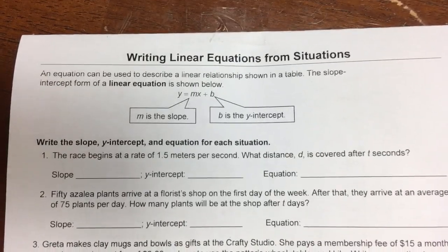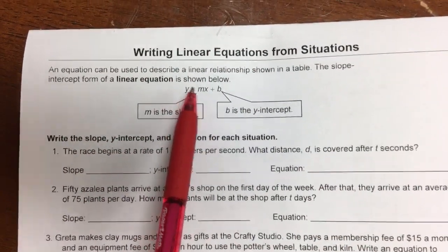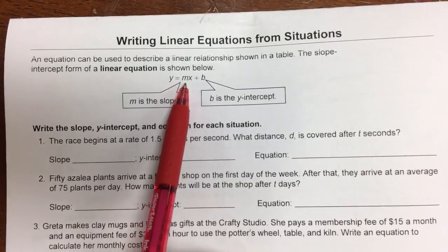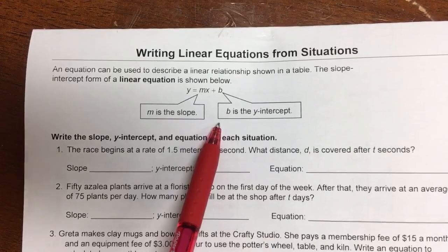Okay, so a linear equation means it's going to make a line, and the way that we write our linear equations is y equals mx plus b. You've seen this before. The m is for the slope, and the b is for the y-intercept.